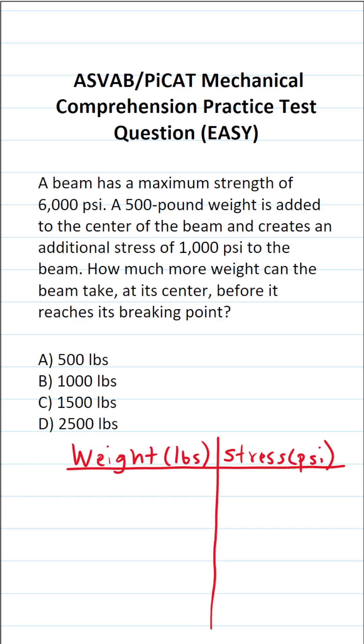This mechanical comprehension practice test question for the ASVAB and PyCat says a beam has a maximum strength of 6,000 PSI. A 500-pound weight is added to the center of the beam and creates an additional stress of 1,000 PSI to the beam. How much more weight can the beam take at its center before it reaches its breaking point?